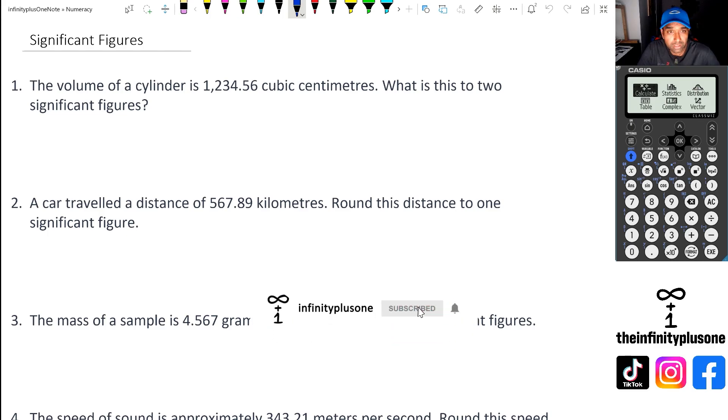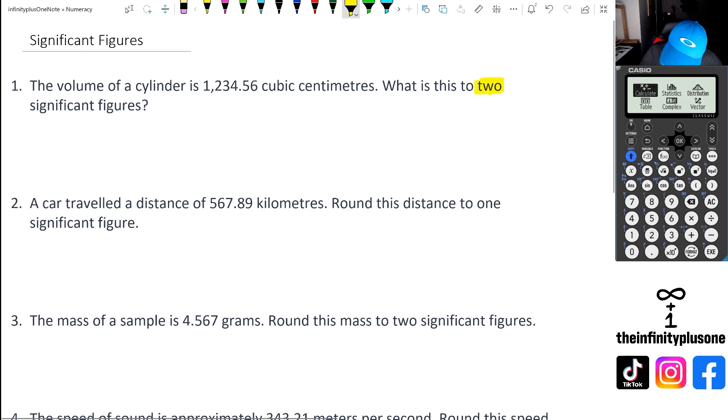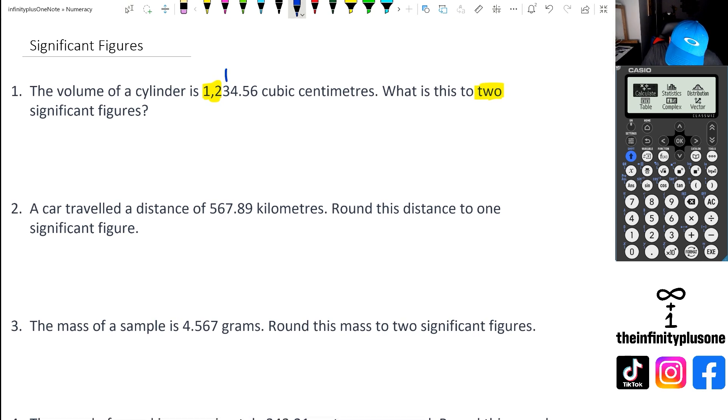So question one, what we've got here is 1,234.56 cubic centimeters. We want this to two significant figures. So all that really means is we're doing this up to two significant figures. We're really only focusing on the first two numbers. But what we also need to know is do we need to round up that number or round down that number? To do that, we're going to look at the number straight after that two there. Notice how that's three. So it's actually less than five. So the answer for this question number one is going to be 1,200 centimeter cubed.